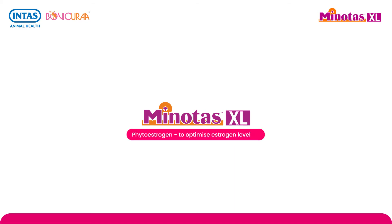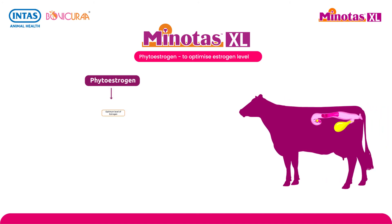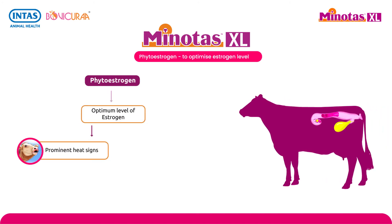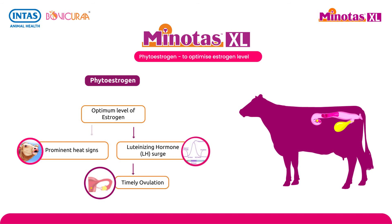Minotars Excel provides phytoestrogen to optimize estrogen levels. Phytoestrogen maintains the optimum level of estrogen, leading to prominent heat signs. Optimum estrogen levels also lead to a luteinizing hormone surge, ensuring timely ovulation.